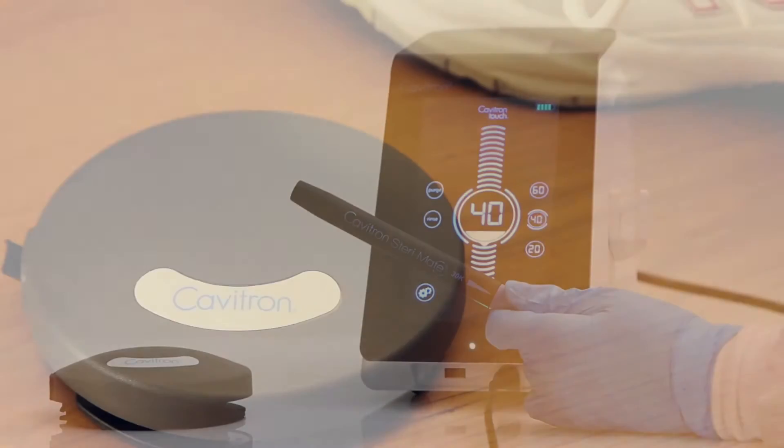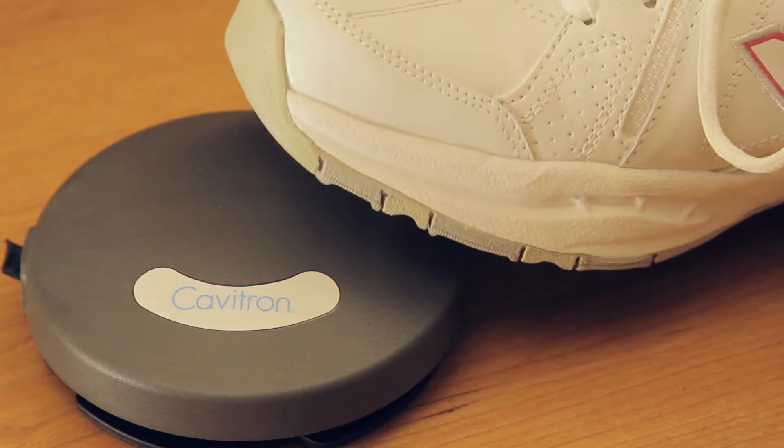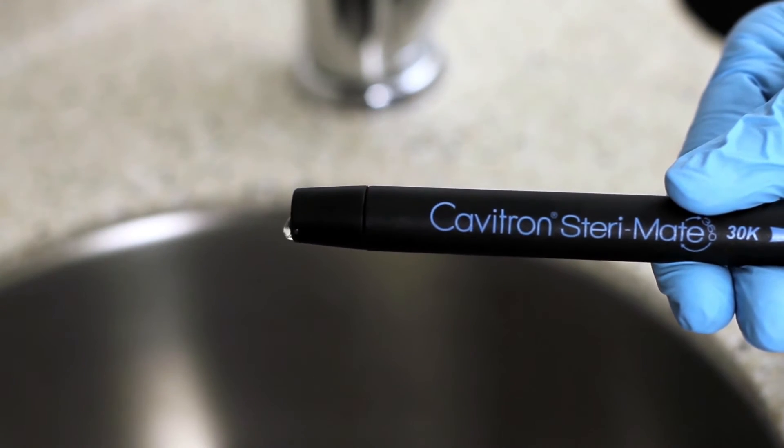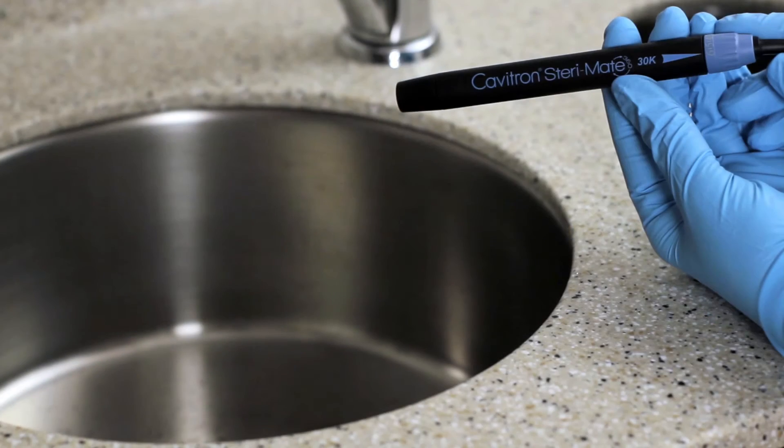Once the cord and handpiece are connected, press the tap-on foot pedal until water exits to release any air bubbles that might be trapped inside the handpiece.